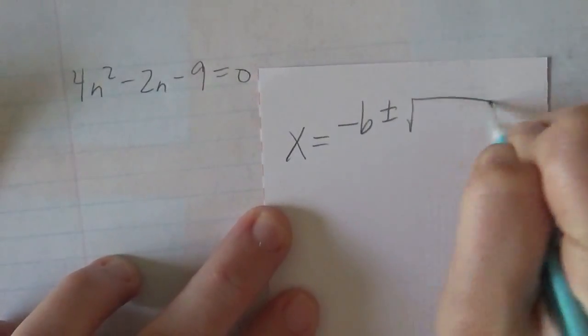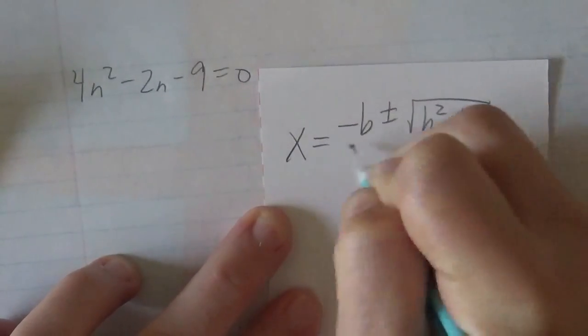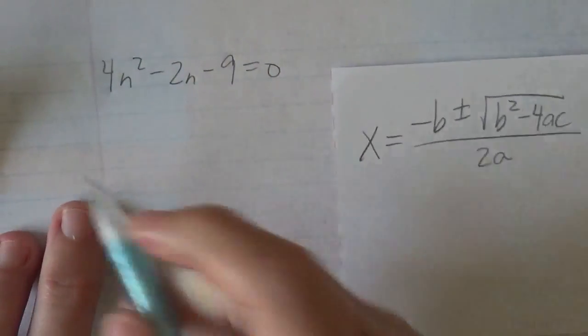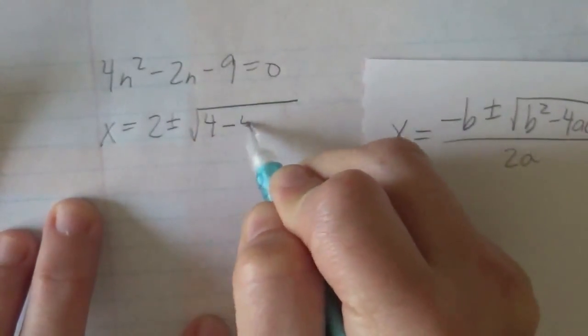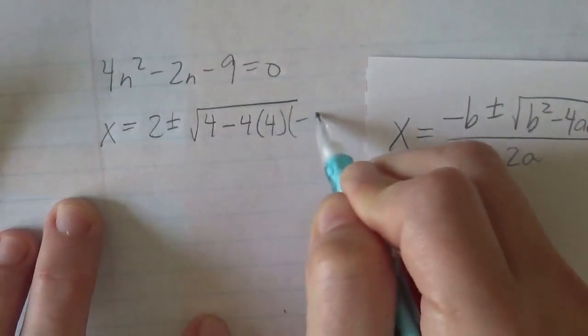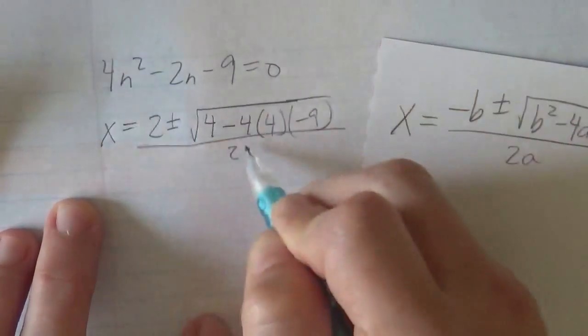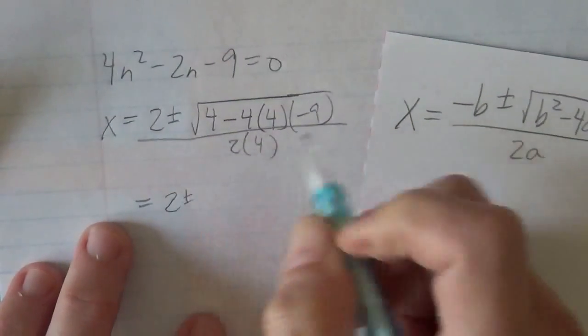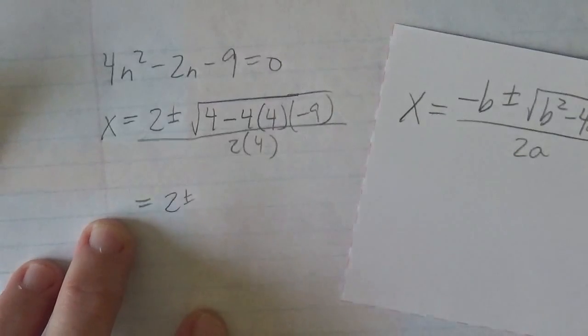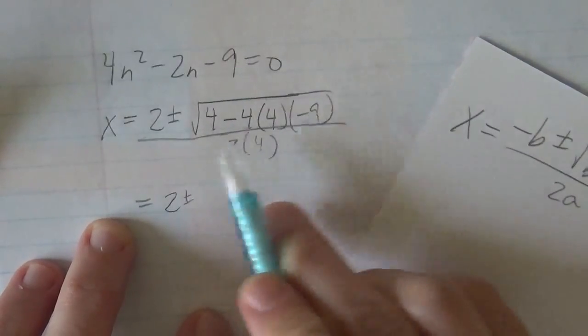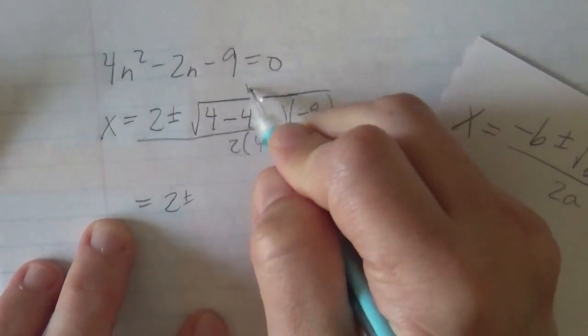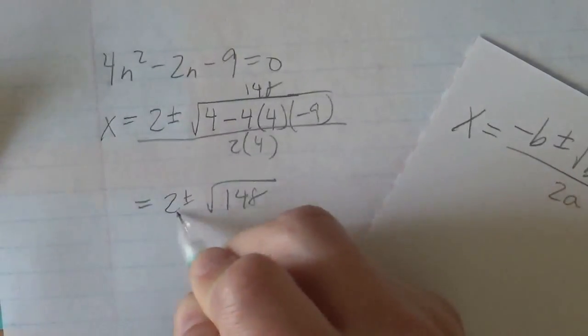And I'll do it with quadratic formula. So remember my quadratic formula, I've written it over here, is x = (-b ± √(b² - 4ac)) / 2a. And so my x will be -b, so a positive 2, plus or minus the square root b² minus 4 times a, which is 4, times c, which is -9, all over 2 times a, which is 4. And so this is 2 ± , let's see, so 16 times 9 is 144, and that's positive 144 because the negative and the negative make a positive. So that's 4 + 144 is 148. So 2 ± √148 over 8.